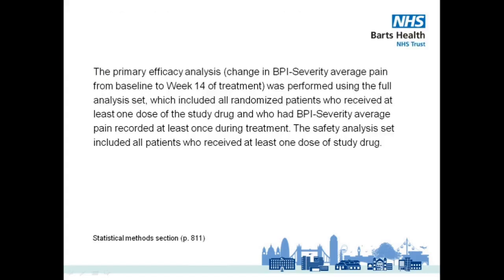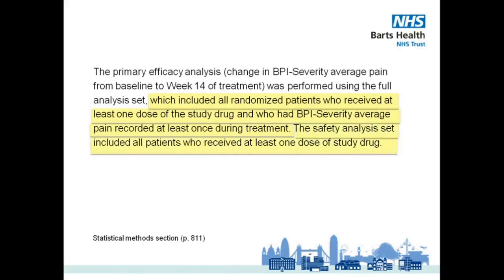On page 811 in the Statistical Methods section, the authors explained that all patients who received at least one dose of the study drug and had their BPI severity average pain recorded at baseline and at least once during treatment were included for the primary outcome results analysis. And all patients who received at least one dose of study drug were considered for the safety outcome analysis. It is common in studies of drug treatment to see an altered ITT analysis where only the patients who have taken at least one dose of a study drug are included.